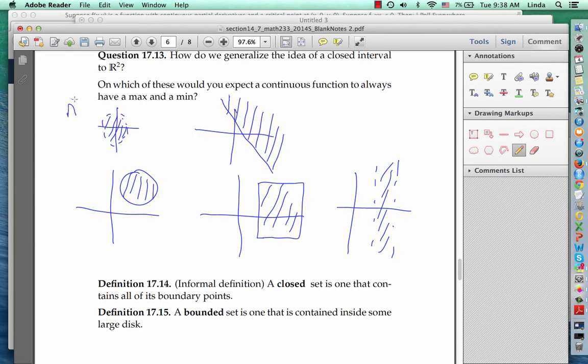Let me number these, or letter them, and give you a couple of informal definitions. A closed set is one that contains all of its boundary points. So in our examples, b, c, and d are supposed to contain their boundary points. That's why the border is drawn solid. Whereas a and e do not contain their boundary points, they're not closed.